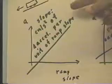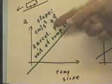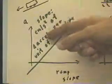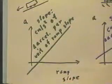So if we change the ramp slope by a tenth of a unit, we should get about 98 centimeters per second squared change in acceleration, and we've observed this.